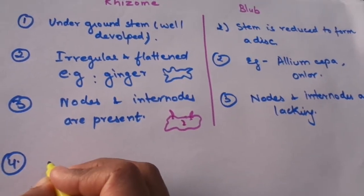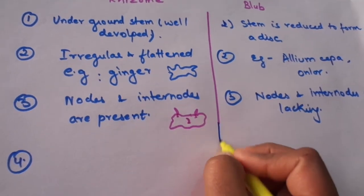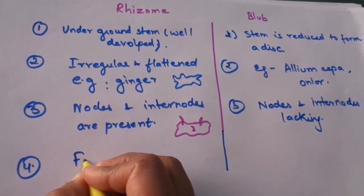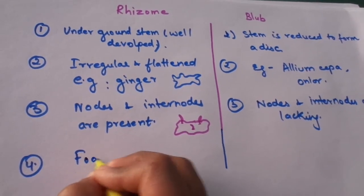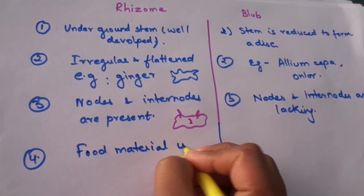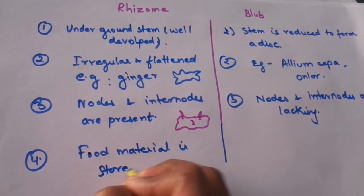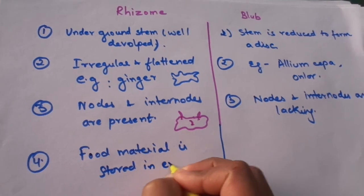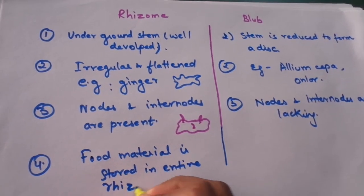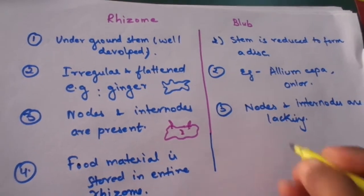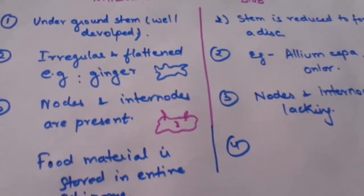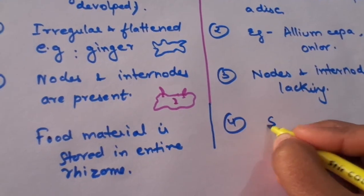The fourth major difference between the two is that the food material is stored in entire stem and branches, or we can see that in entire rhizome. However, in the case of bulb, the food material is stored only in the scale leaves.